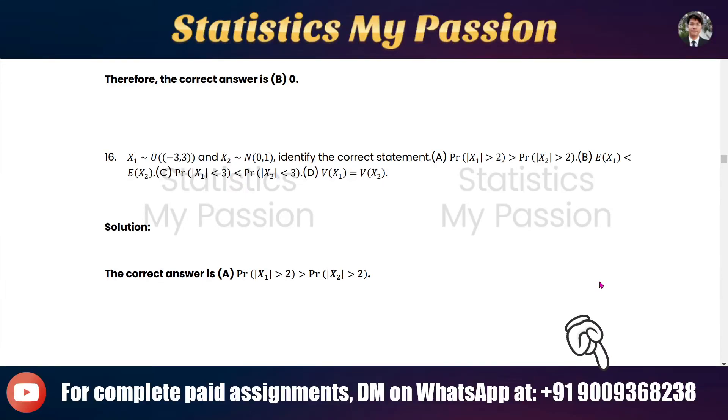Now we see question 16, which is very short and clear. It says that x1 is uniformly distributed U(-3,3) and x2 is normally distributed N(0,1). Identify the correct statement.